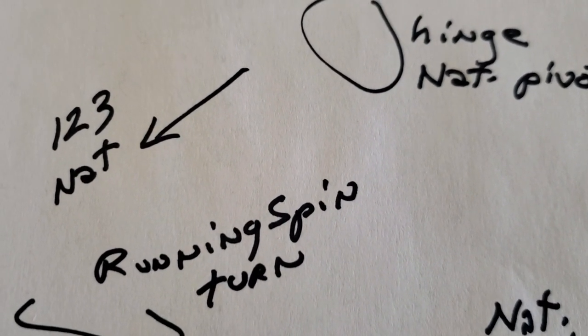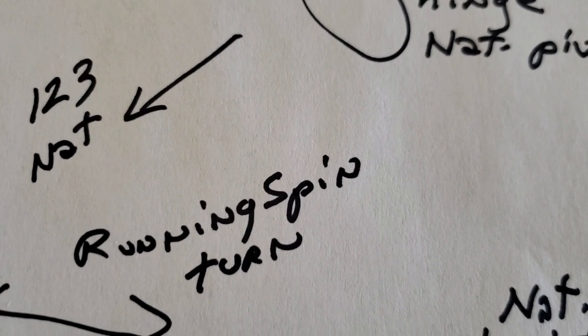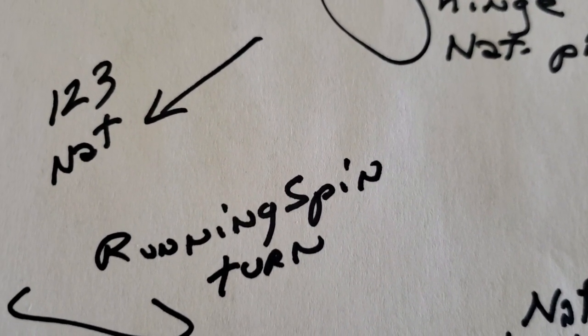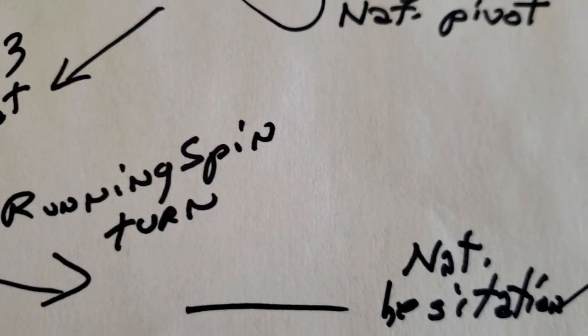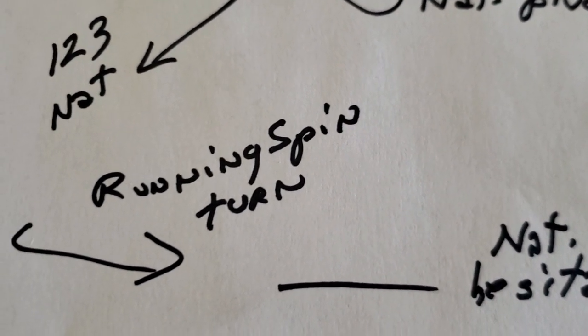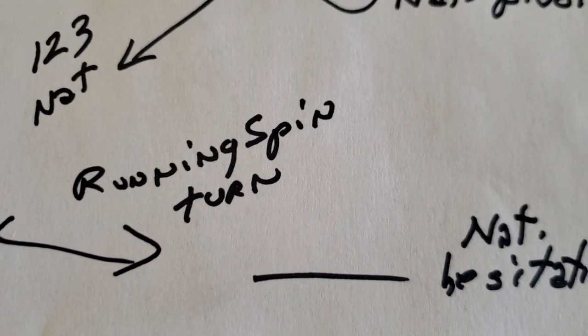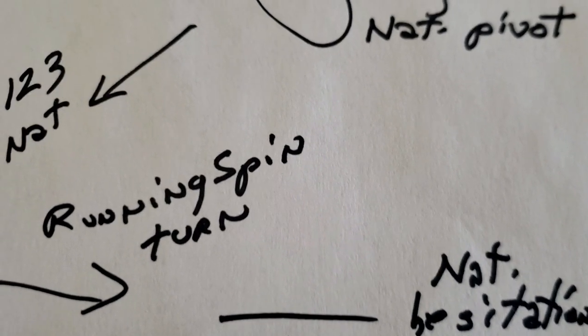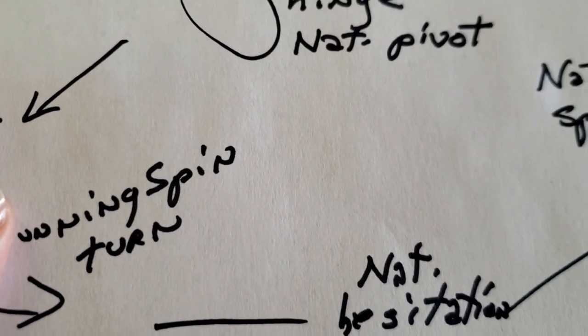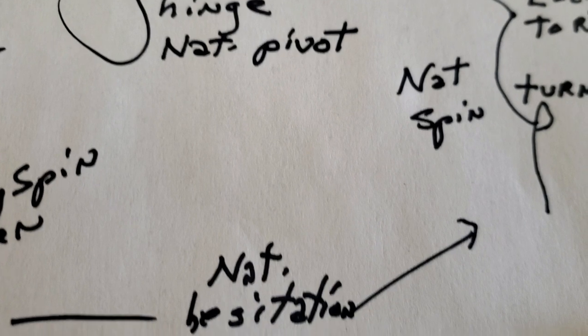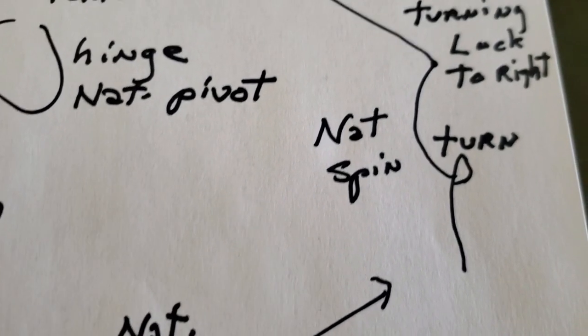Now previously when we were dancing the running spin turn we were on the long wall, but it's coming up on the short wall now because otherwise we'll get the routine too long. The natural hesitation will take up, even in the studio, most of the short wall. In your space at home you're not going to be able to get all this.